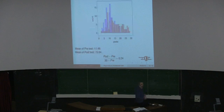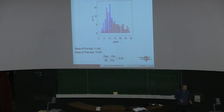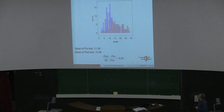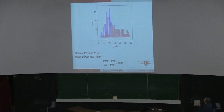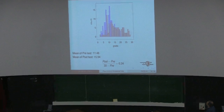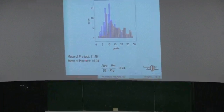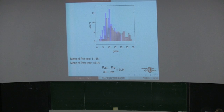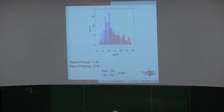Some of you were asking about the exams from last semester. This histogram shows your results: the blue is the pretest taken at the beginning of the semester, and the red is the post-test at the end. The mean of the pretest was 11.48 and the post-test was 15.94 — roughly a four-point increase.